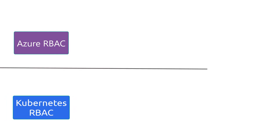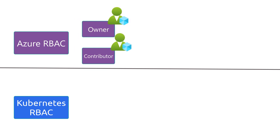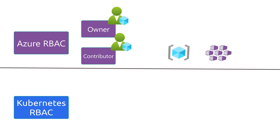Now that we have that concept cleared, let's understand two more concepts: Azure role-based access control and Kubernetes role-based access control. Azure role-based access control allows you to define role-based access on Azure resources. For example, a user can be assigned as an owner, contributor, or reader at a resource group level or at an Azure resource level.